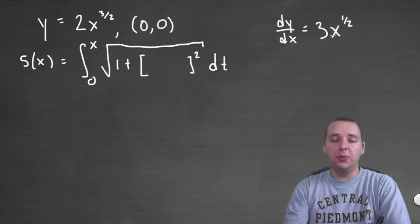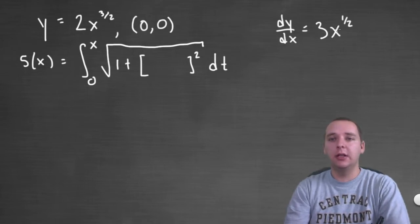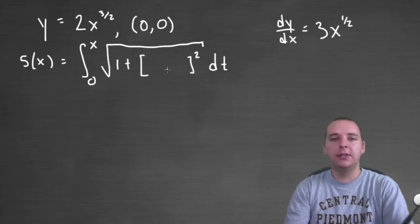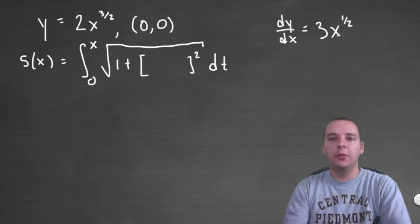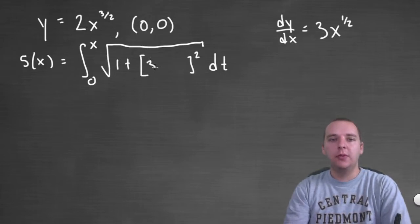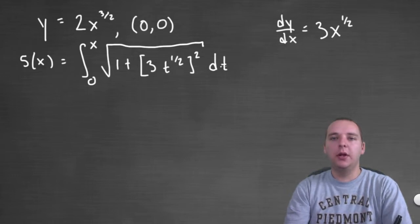And so if we want to write this derivative simply as a function of t we just change the letter is all. This integrand doesn't care what letter we use but we're going to need to use t since we're integrating with respect to t. So we'll have 3t to the 1 half quantity squared dt.